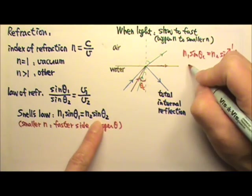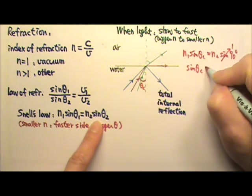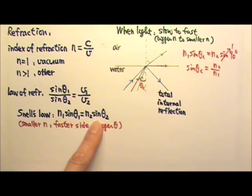And sin 90 degrees is 1. That means sin θc is n2 over n1.